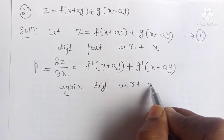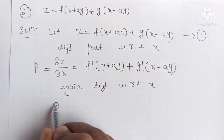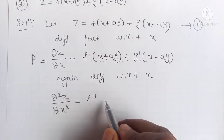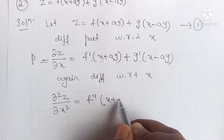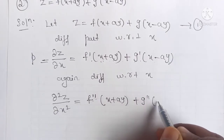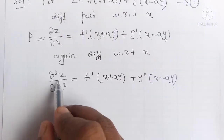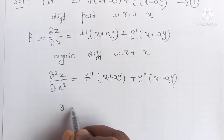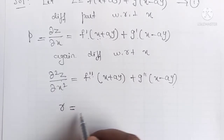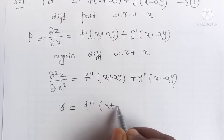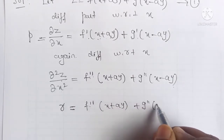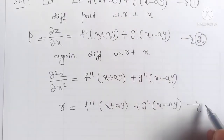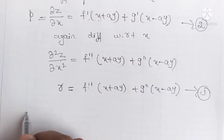Differentiating again with respect to x, we get dou² z by dou x² equals f double dash of (x + ay) plus g double dash of (x − ay). This is represented by r. So r equals f double dash of (x + ay) plus g double dash of (x − ay). Consider this as equation 2, and the first derivative result as equation 3.